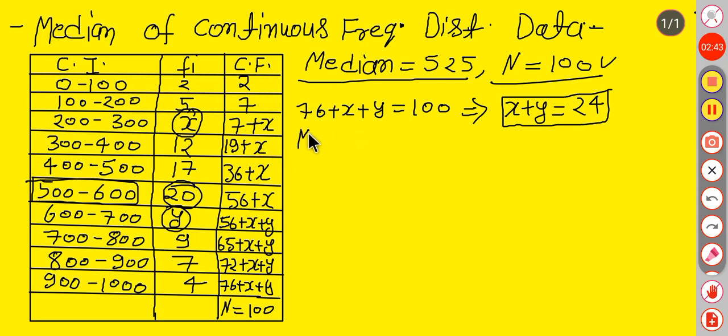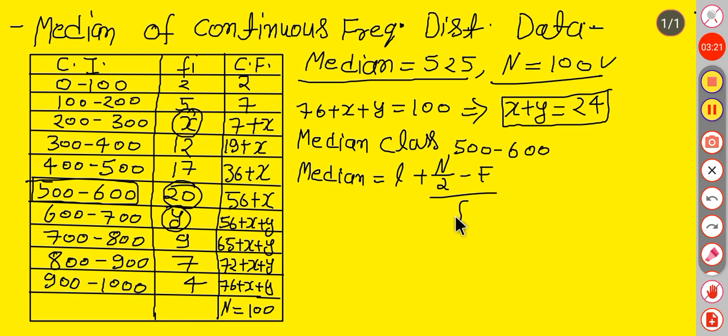So median class is the lower limit plus n upon 2 minus capital F upon small f into h.